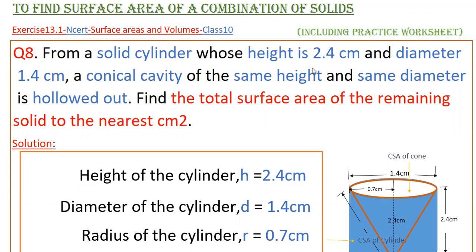Hello everyone. Today I am going to tell the solution of a problem from Exercise 13.1 from NCERT, Surface Areas and Volumes, Class 10. From a solid cylinder whose height is 2.4 cm and diameter 1.4 cm, a conical cavity of the same height and same diameter is hollowed out. Find the total surface area of the remaining solid to the nearest cm².